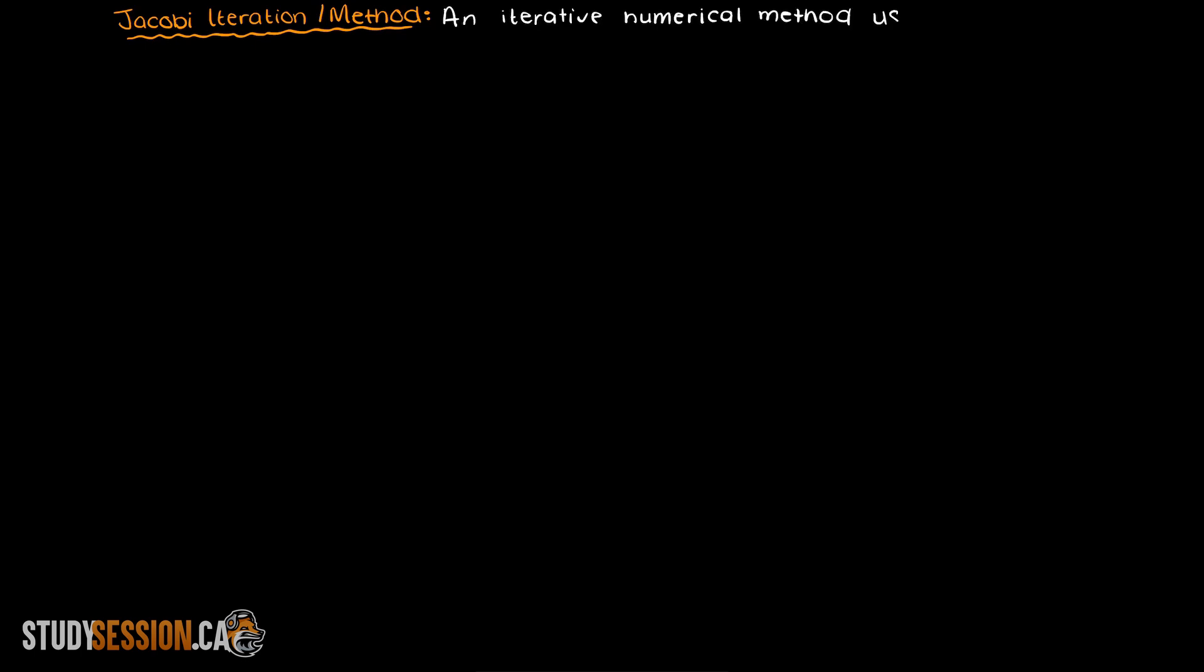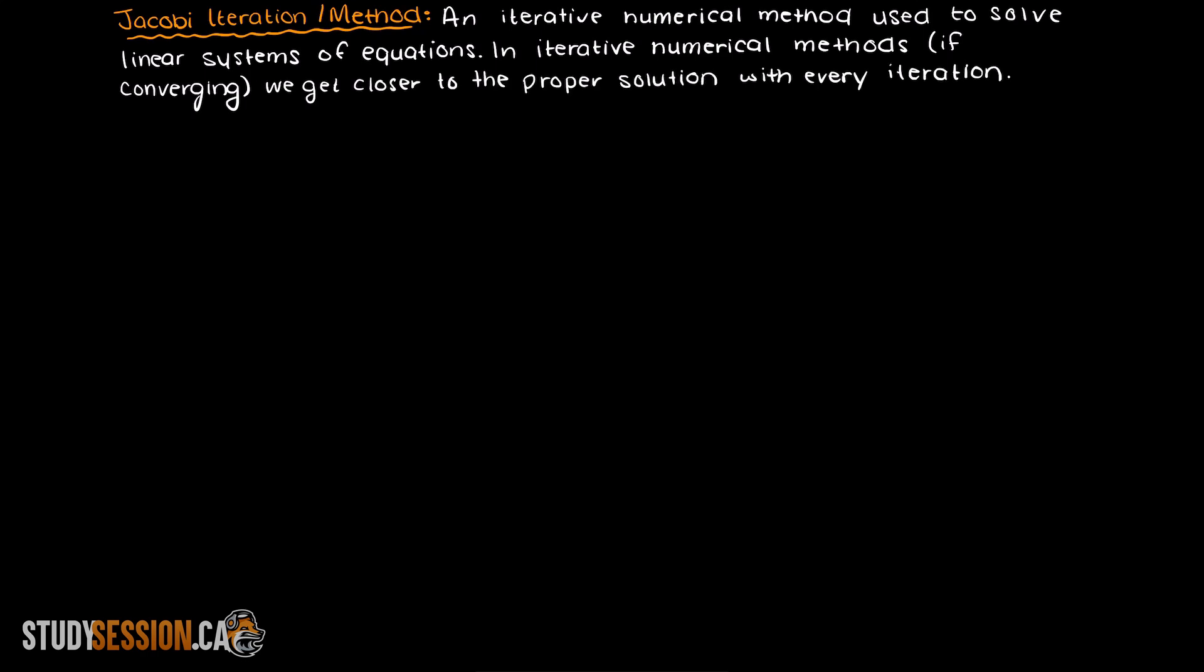Alright, so let's get into what the Jacobi method is. Jacobi method is an iterative numerical method, meaning we iterate or take many steps to get from our starting position to our final answer. And every step that we do take will be one towards minimizing the error of our problem.